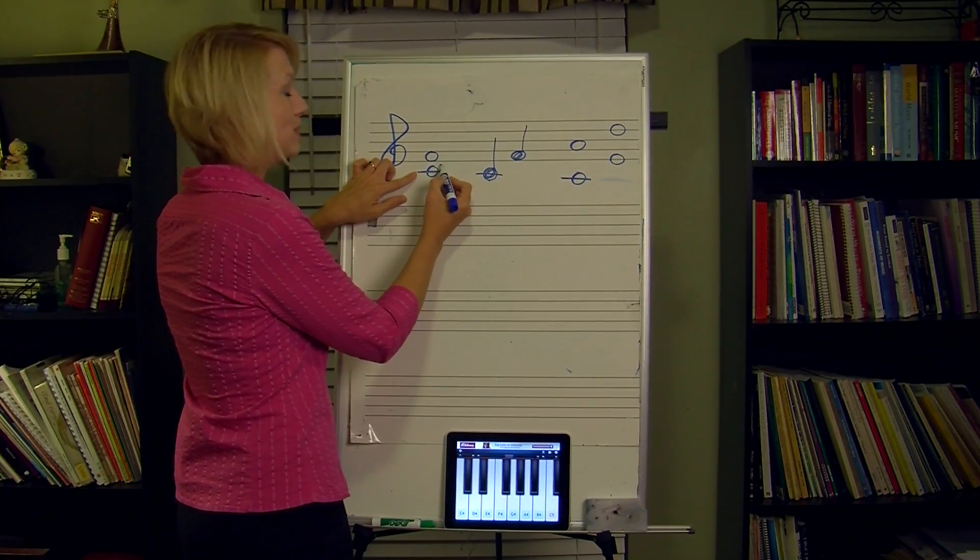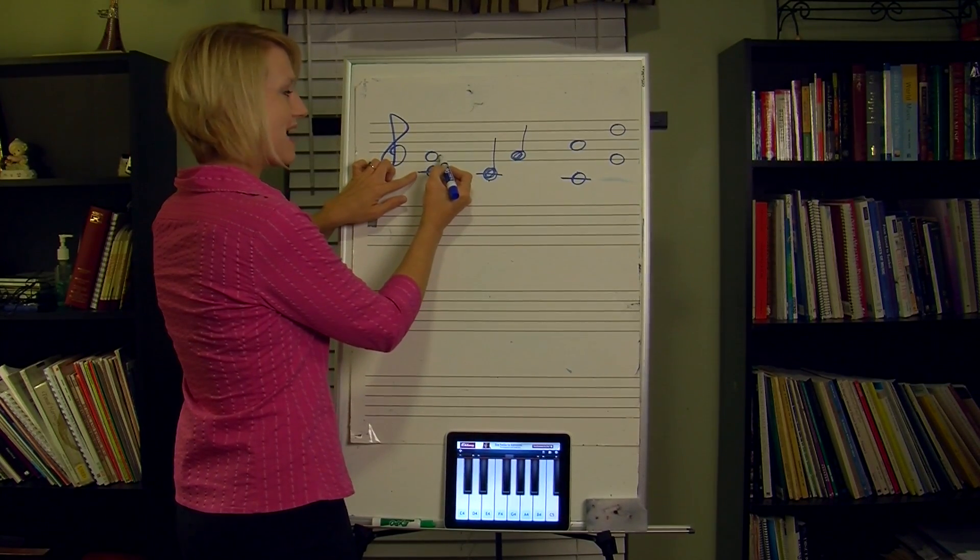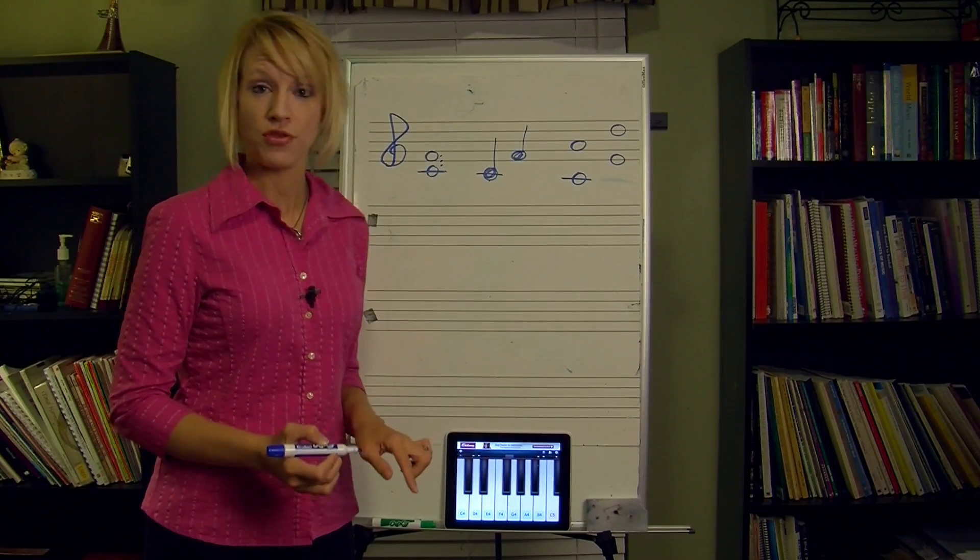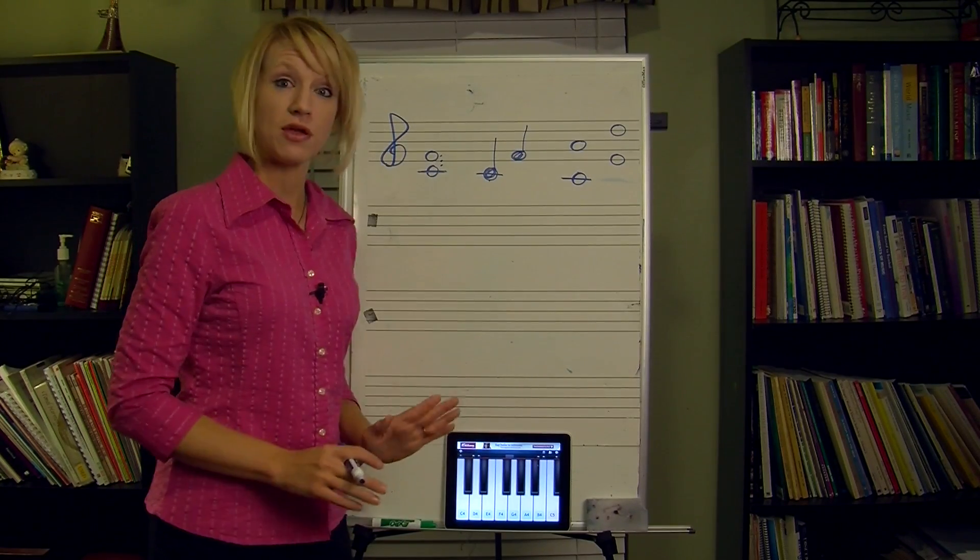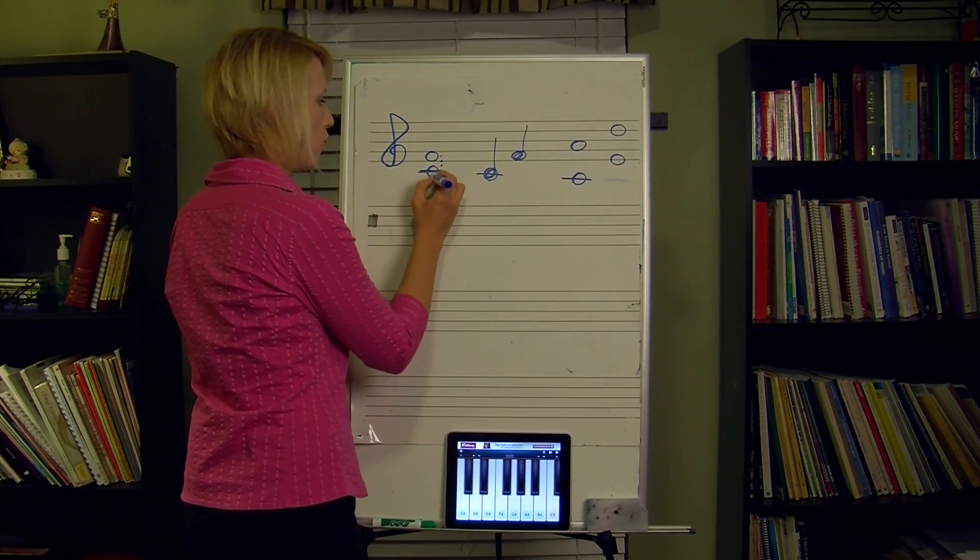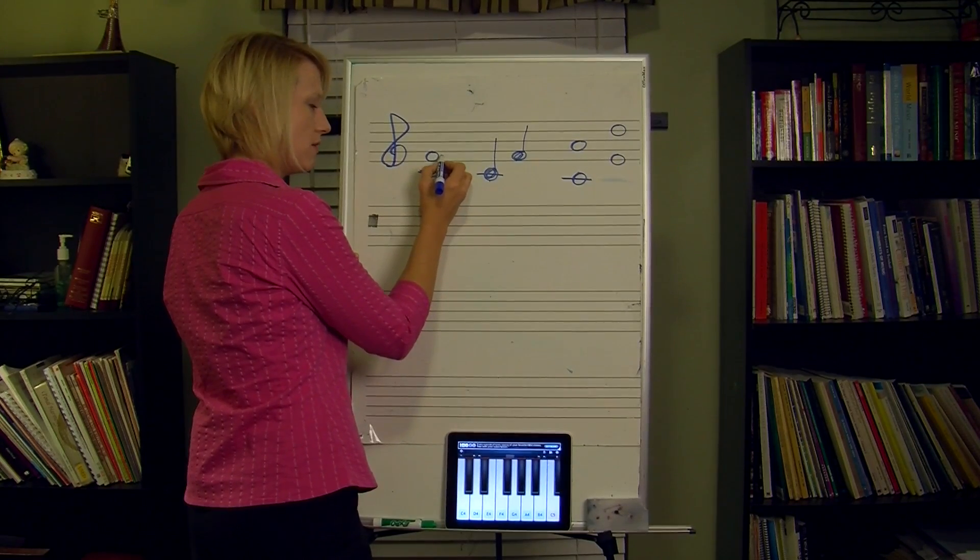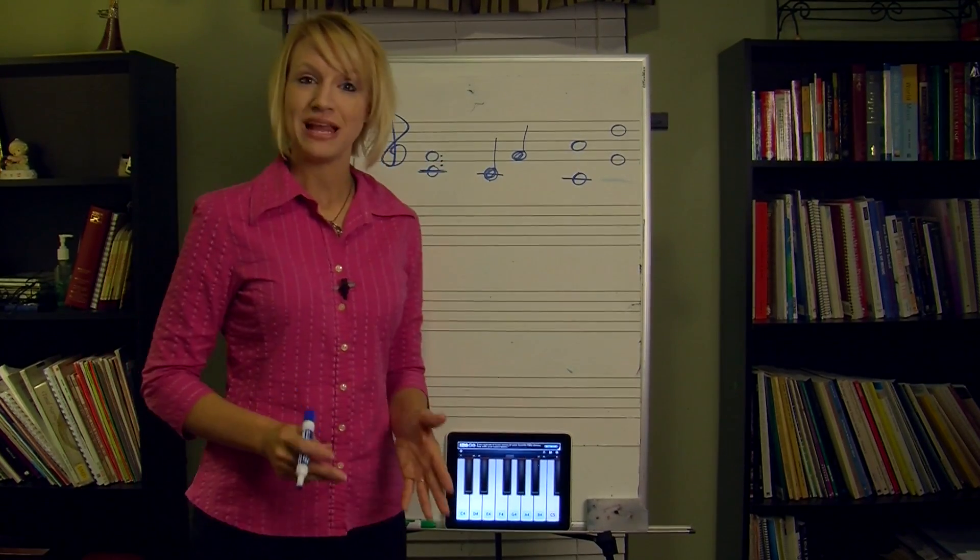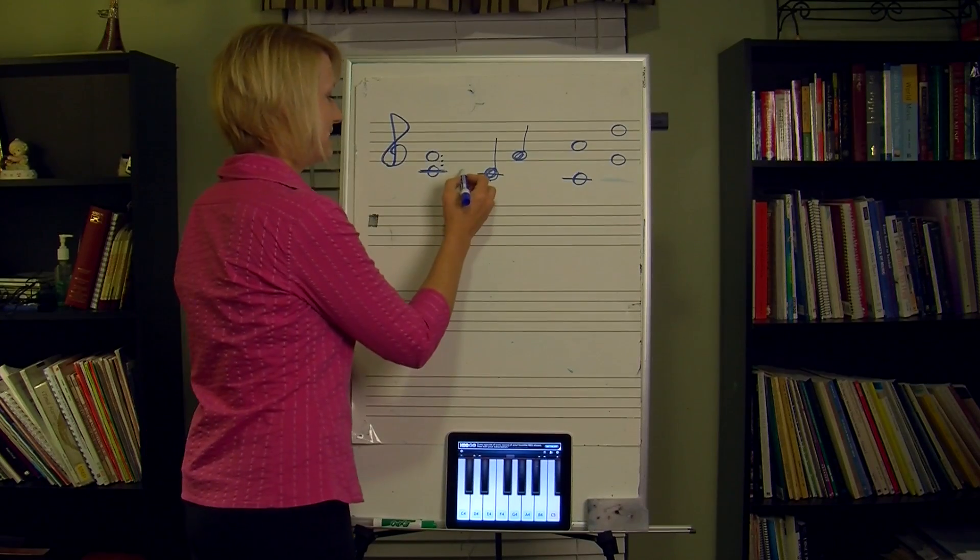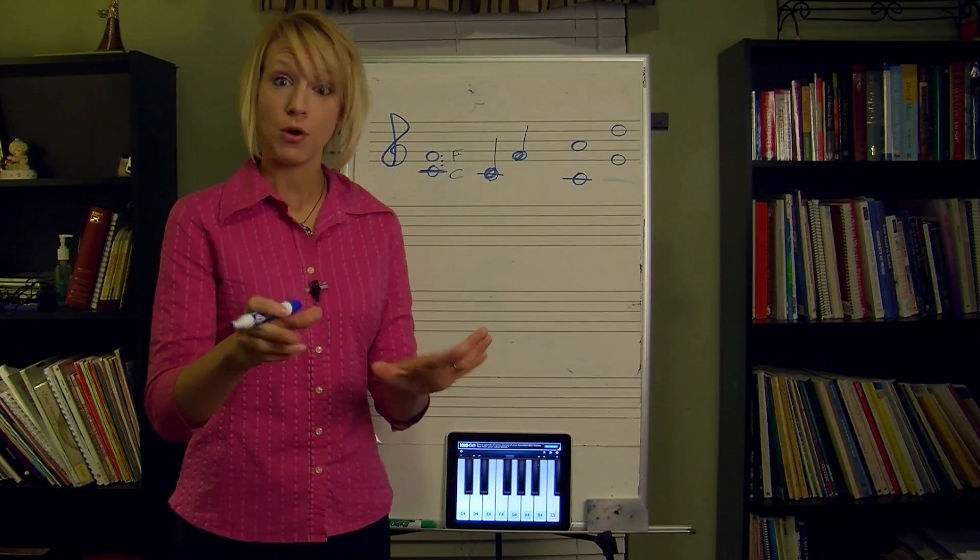If we had a note there that would be D which would be two. E would be three. That F right there is the fourth. So this is a fourth as far as the generic name. So you count from the bottom note as 1, 2 would be the space, 3, 4. You can also do it just by letters. So you could write in C, D, E, F and then just count from the bottom to the top letter. Include them both.